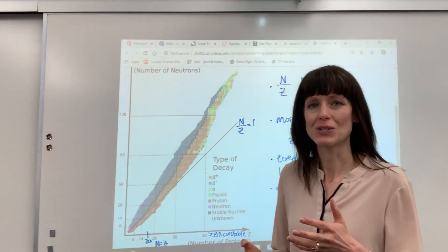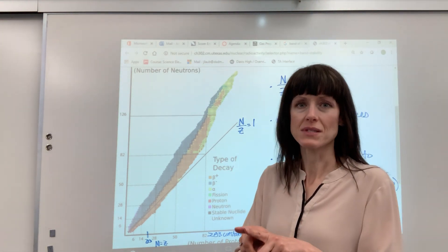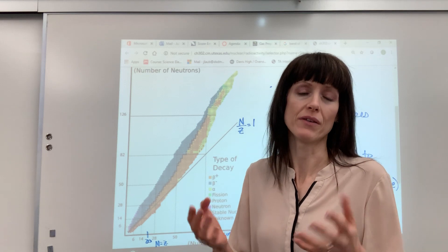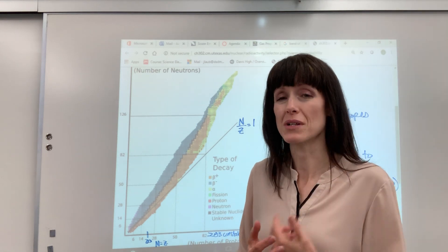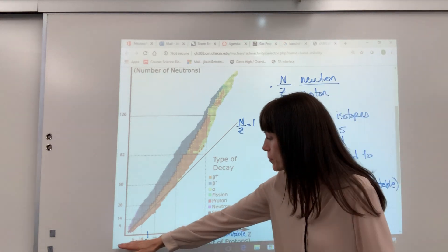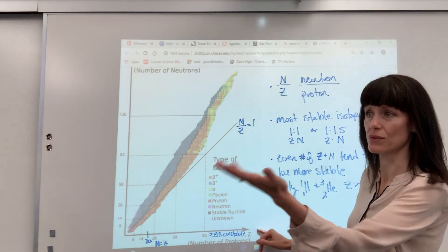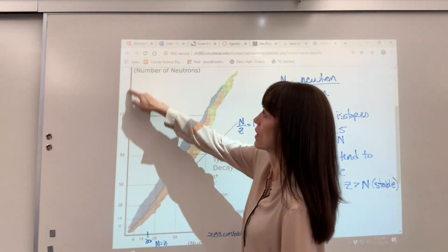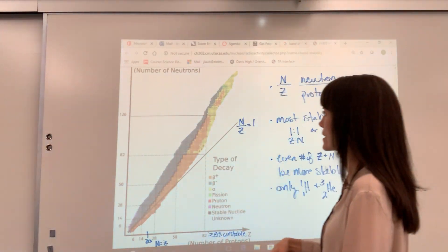And remember an isotope is simply two atoms. They have the same number of protons. They're going to be the same element, but a different number of neutrons. So notice down here we've got number of protons, six through, and that's going to be our 118. And then here we have our number of neutrons on the y-axis.